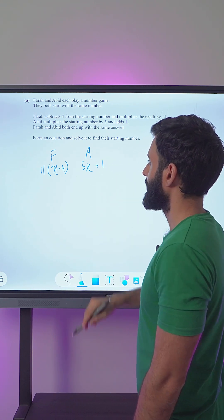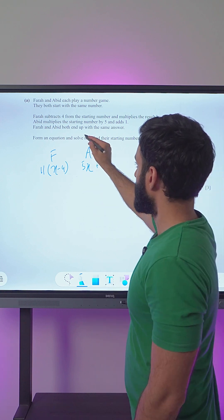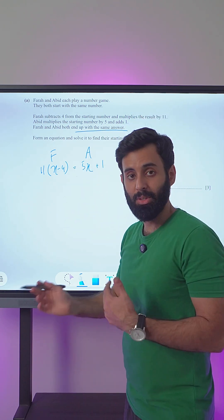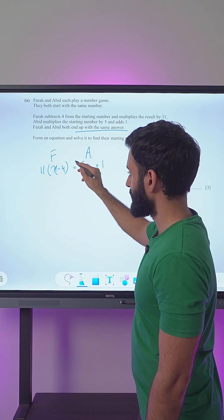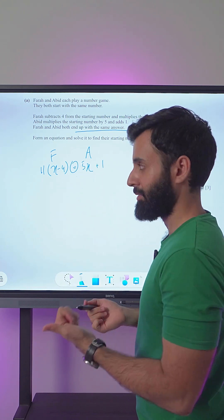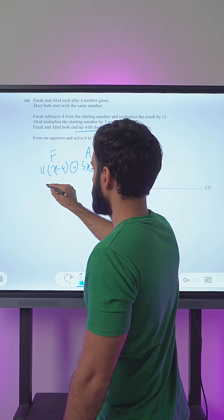And adds 1, so he does plus 1 in the end. Farah and Abid both end up with the same answer. That means now the results are both equal. So this was the missing piece of the puzzle. We now have an equation which we can solve to find the value of x.